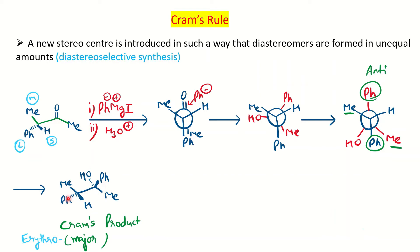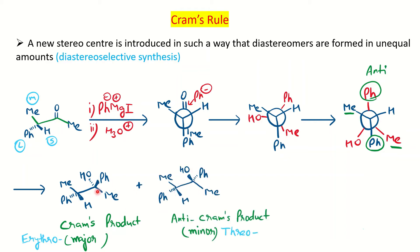When the two Ph groups are opposite to each other, the configuration is called the erythro configuration. This is called the Cram's product, which is the major product. Since we are talking about stereoselective synthesis, you will also have a minor product — the threo product, where Ph is on the wedge line. This is the other possibility and is called the anti-Cram's product. We have generated a new stereocenter and found the erythro isomer is major.